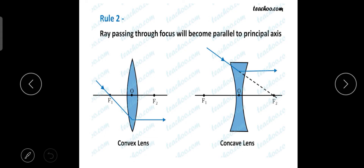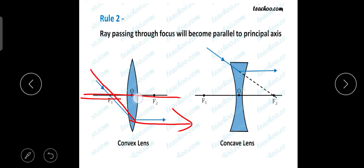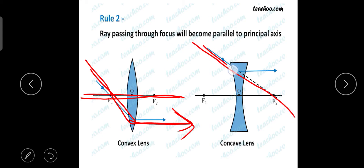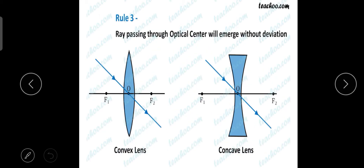The second rule: the light ray passing through the focus will become parallel to the principal axis. In the convex lens, the ray coming through the principal focus goes parallel to the principal axis. Similarly in the concave lens, the light ray directed toward the principal focus diverges and travels parallel to the principal axis.